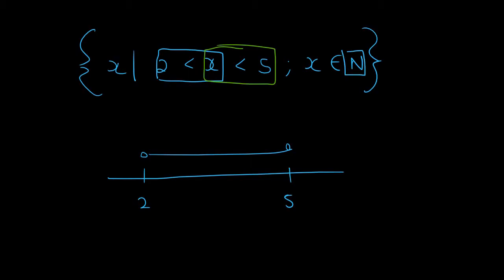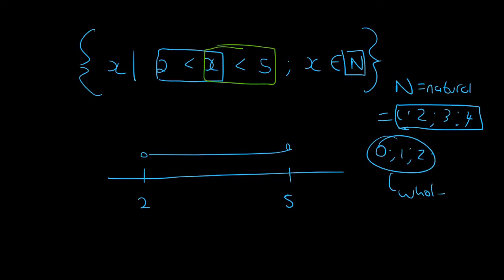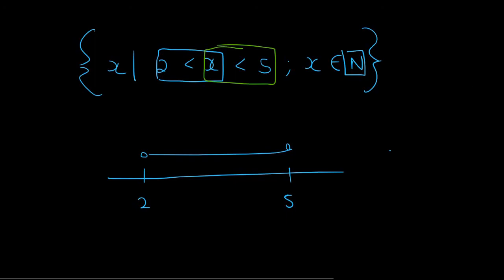Look at this. N stands for natural. If I asked you to start counting for me you would say 1, 2, 3, 4. Those are natural numbers. If you started counting at 0 those are called whole numbers. So we're only busy with natural numbers.